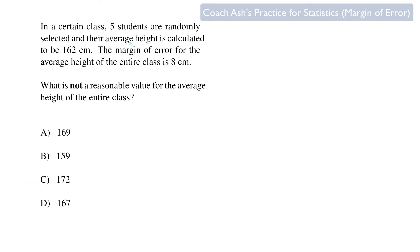Now you try to solve this problem. You're given the average height of just five students is 162, and the margin of error is eight. So you've got to subtract and add and try to find out what is not a reasonable value. Post your answer in the comment section.